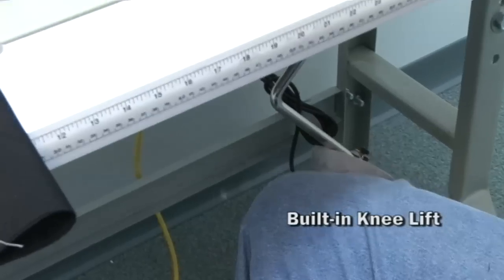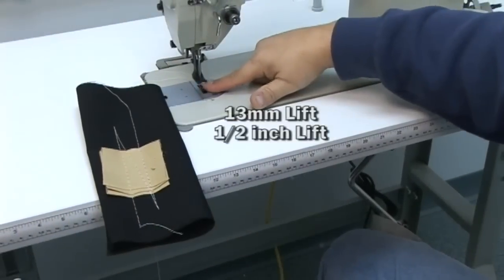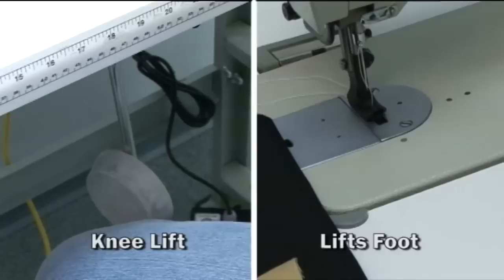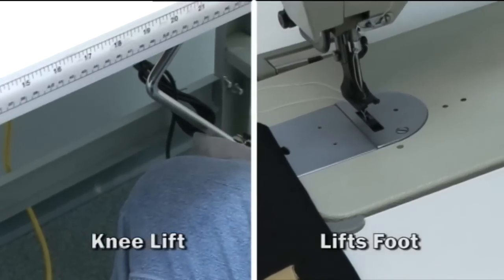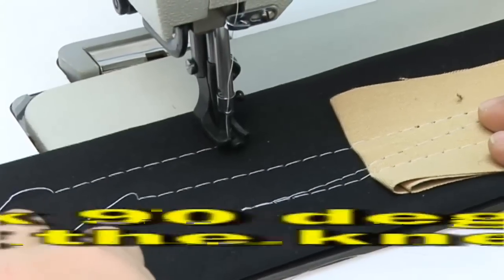Get your work done quickly. No need to reach behind the machine to lift up the presser foot. You can use this built in knee lift. It'll lift the foot up to 13mm in height. That's an extra high lift for thick assemblies.